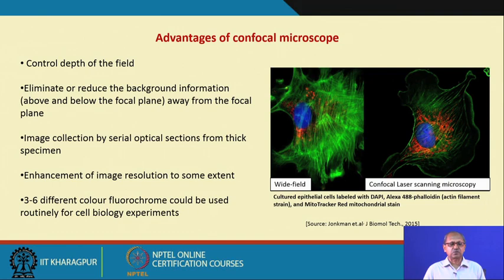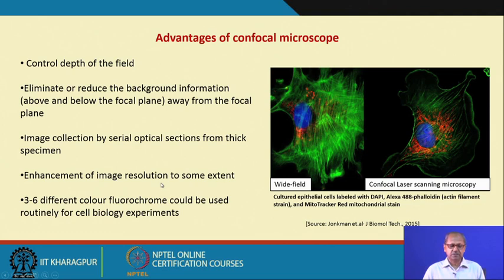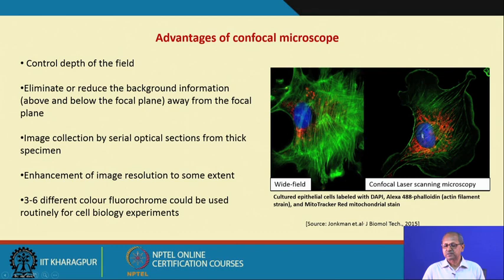In contrast, using confocal microscopy provides several advantages: control of depth of field, elimination or reduction of background information from above and below the focal plane, image collection by serial optical sectioning from thick specimens, and enhancement of image resolution due to the pinhole. Up to 3 to 6 different color fluorochromes can be used routinely. The same epithelial cell imaged with confocal microscopy gives very sharp images of the nucleus, mitochondria, and actin filaments.